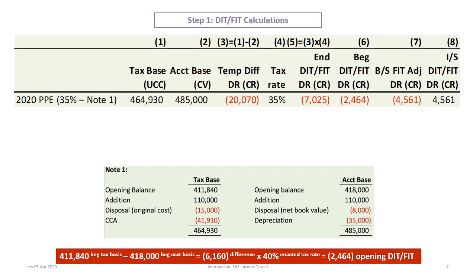The approach works like this: we always start with the tax basis, then take tax base minus accounting base to get the temporary timing difference. Multiplying that balance by the enacted tax rate gives the ending deferred tax balance needed on the balance sheet. For property, plant, and equipment, we calculate the ending UCC balance based on the following calculations.